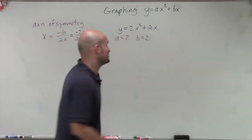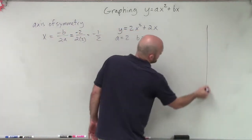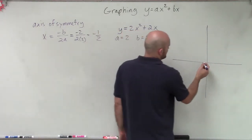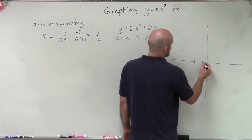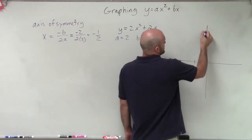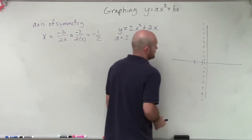So in graphing my quadratic, the first thing I'm going to do is plot my axis of symmetry. So I have negative 1, negative 2. So at negative 1 half, that's going to be halfway between 0 and 1. I'm just going to draw this nice little dotted line right here.